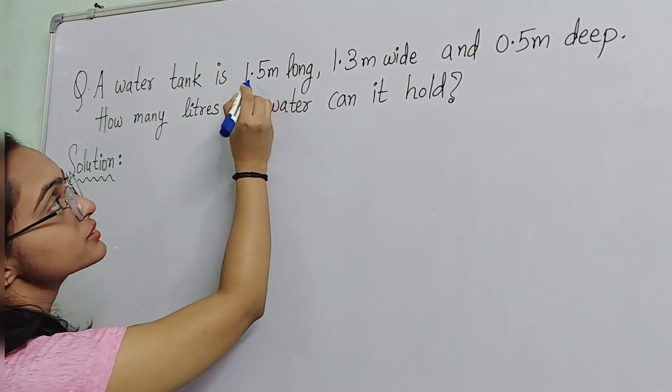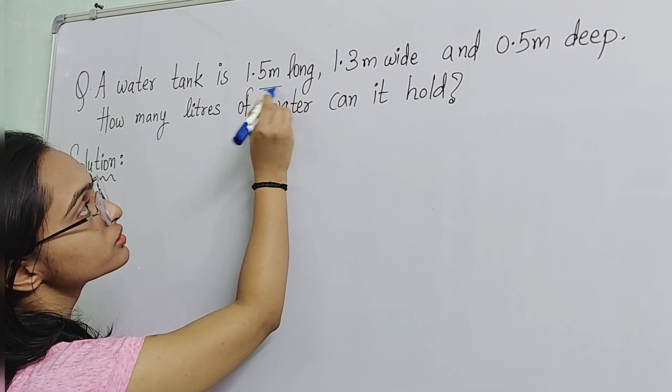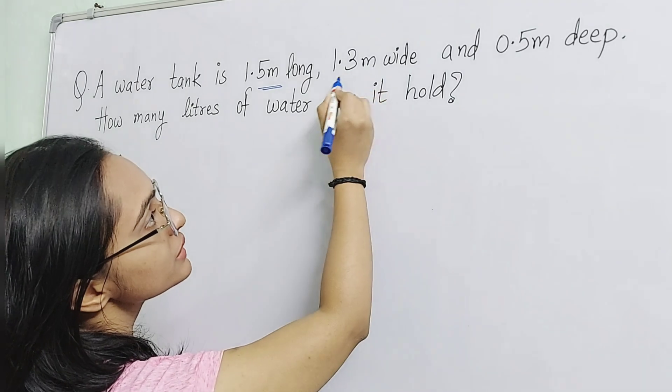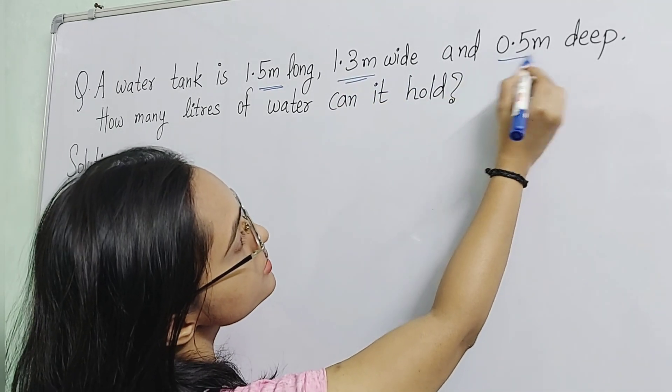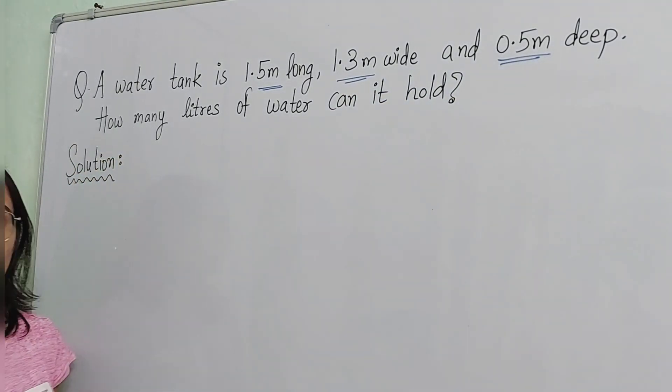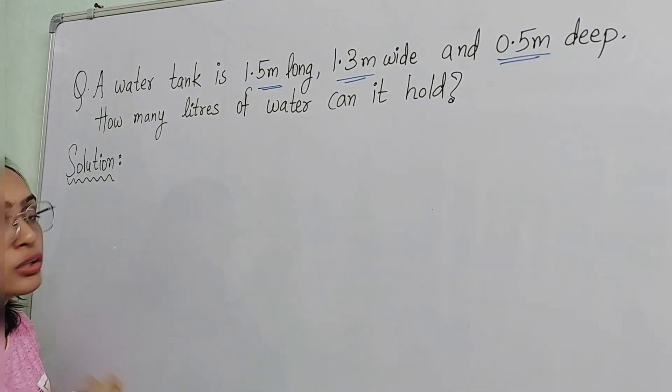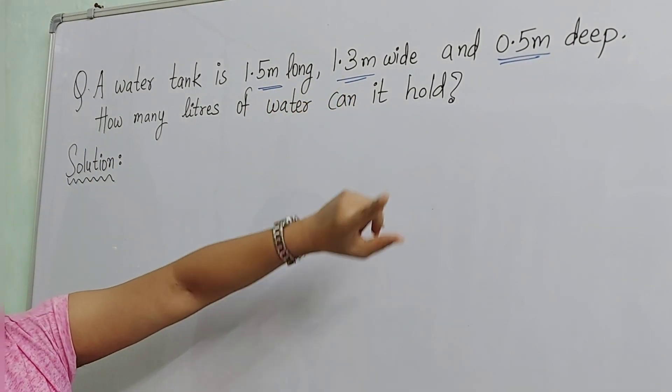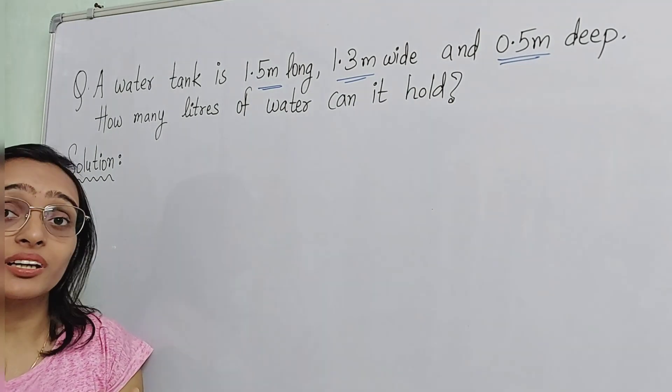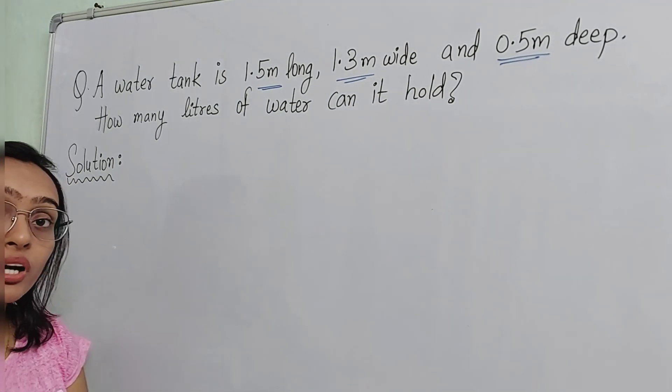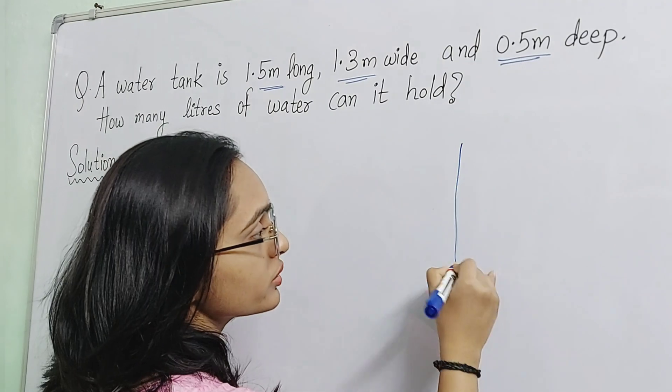A water tank is 1.5 meters long, 1.3 meters width and 0.5 meters depth. How many liters of water can it hold? It's a water tank with 3 dimensions. If you don't understand it, what will we do? It's a water tank.